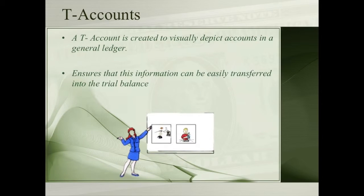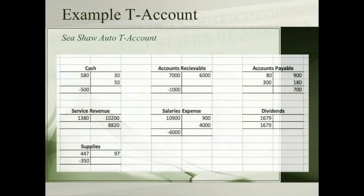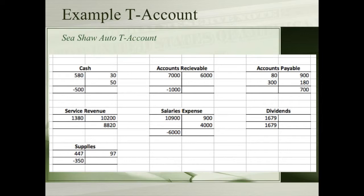T accounts are created to visually depict accounts in the general ledger. This process is important to ensure that all information can be easily transferred into the trial balance. If an error is made in your trial balance, this could potentially not balance out. In the T accounts, debits are recorded on the left and credits on the right. You can see in this example the company Seashore Autos — for cash there is a debit of $500, which is also known as the outflow.